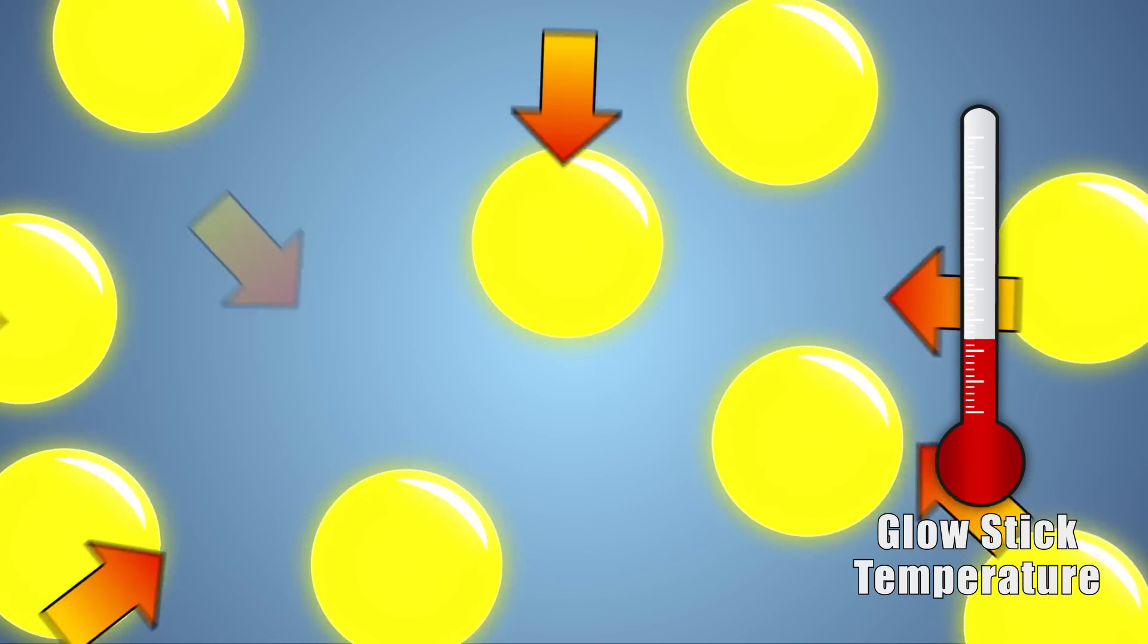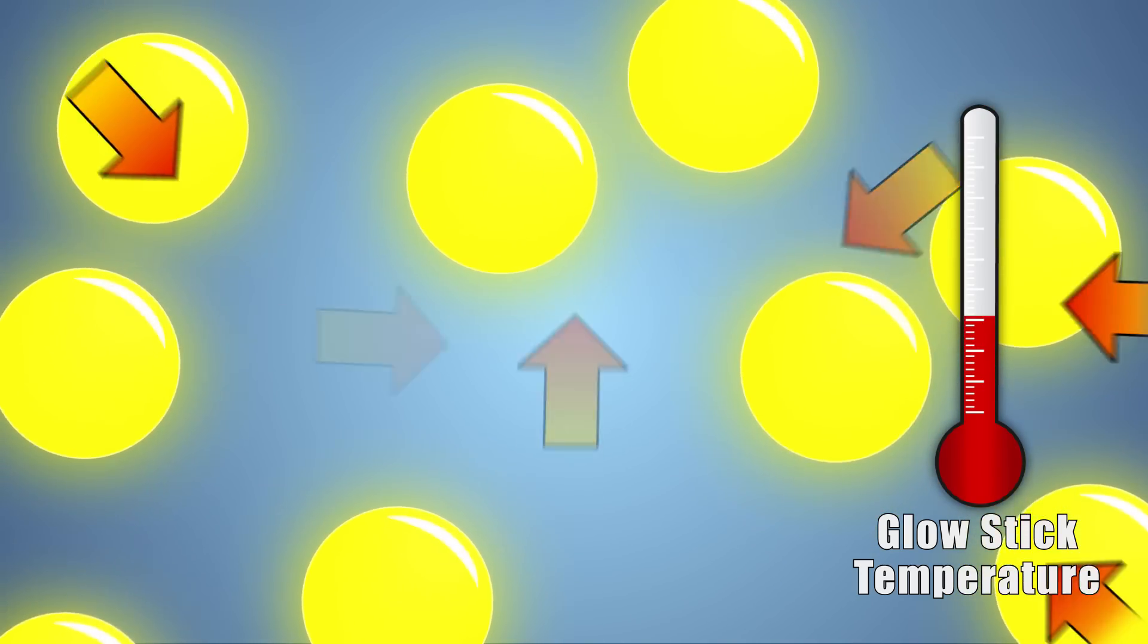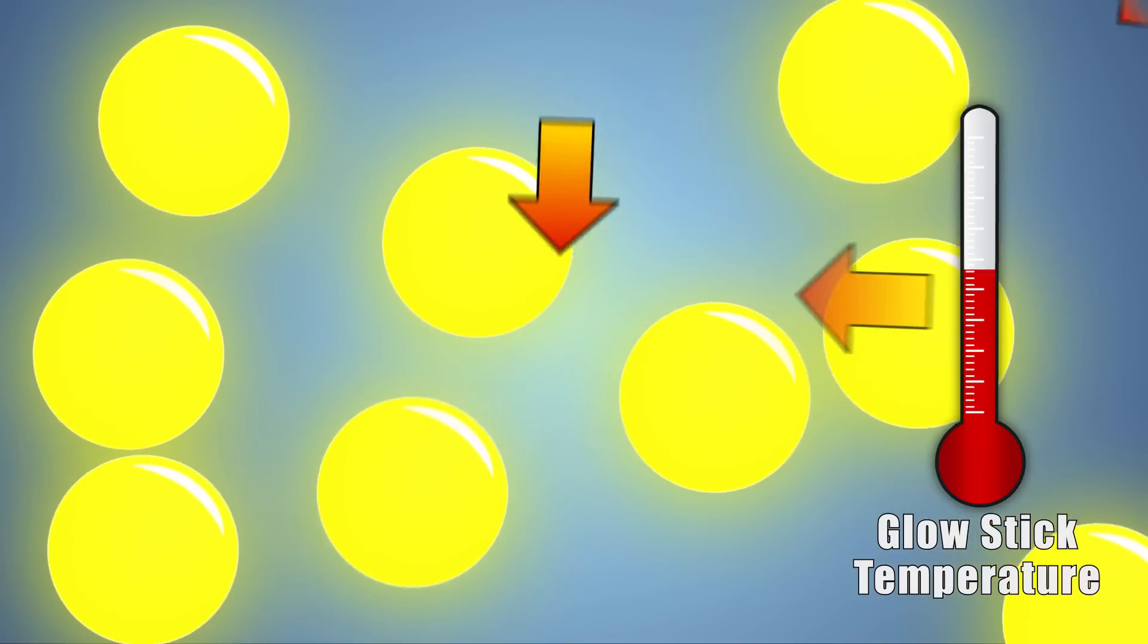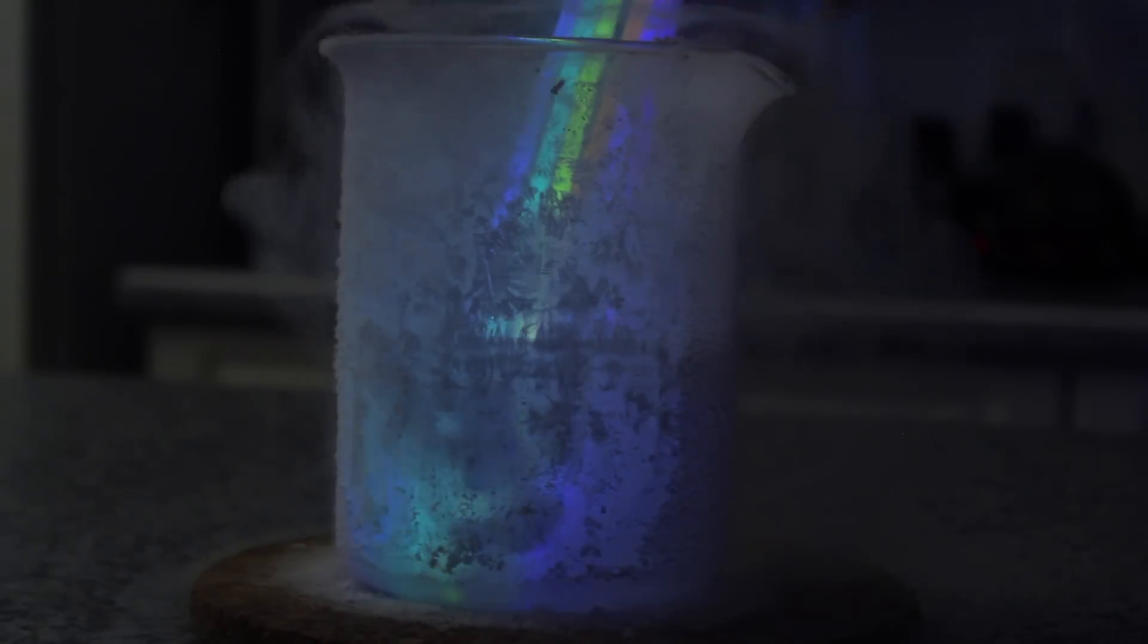This rise in temperature allows the molecules in our reaction to collide more often, releasing more energy and eventually returning the glow sticks to their bright glow. The reactants in this reaction will continue to bump into each other over and over, creating new molecules as products until the concentration of reactants has diminished.